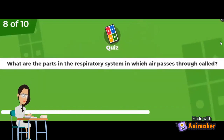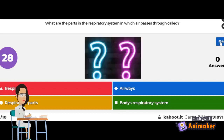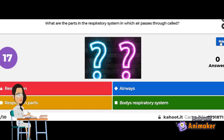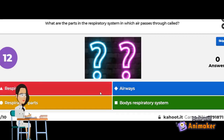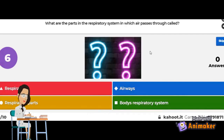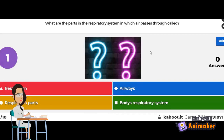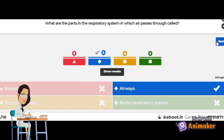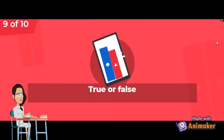What are the parts of the respiratory system in which air passes through? Respiration, airways, respiration parts, or body's respiratory system? The correct answer is airways. Good job!